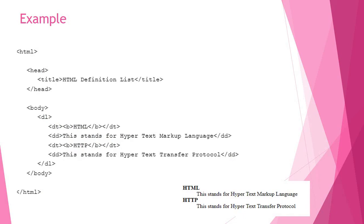Here is an example of a definition list. We start with the dl tag, then use dt to write the term — for example HTML — and dd to write its definition: stands for HyperText Markup Language. Then dt for the next term — HTTP — and dd for its definition: stands for HyperText Transfer Protocol. Finally the dl tag is closed. In the next class we will see nested lists.